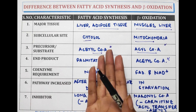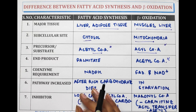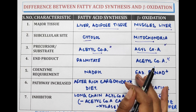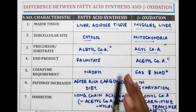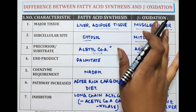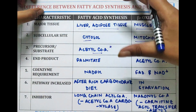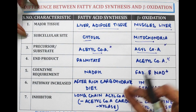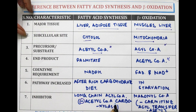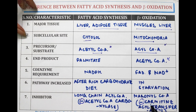Fatty acid synthesis is accelerated when a rich carbohydrate diet is taken, whereas in the case of starvation — when a person has not eaten for the last 10 to 12 hours or more — beta oxidation is accelerated. The inhibitor for fatty acid synthesis is long-chain acyl coenzyme A, which causes inhibition of acetyl coenzyme A carboxylase. The inhibitor for beta oxidation is malonyl coenzyme A, which inhibits carnitine acyl transferase 1.